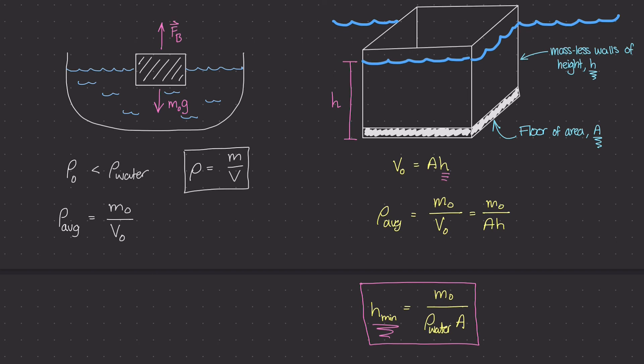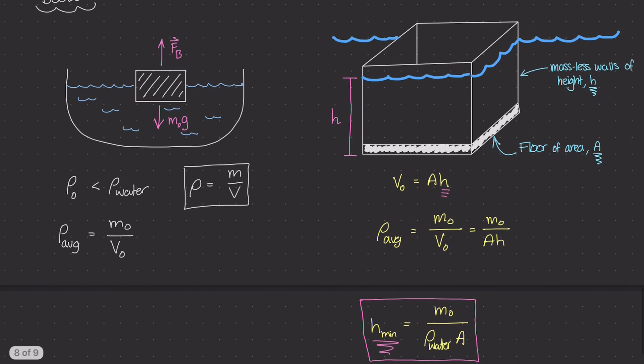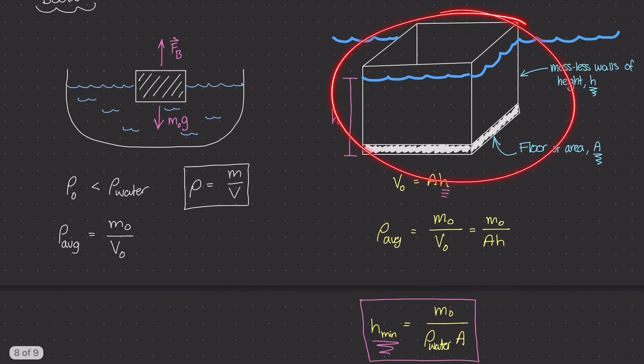Now obviously, this is very simplified - boats don't look like open boxes like this. But hopefully, this does give you a better idea as to how the geometry of the actual boat can push aside or displace a large amount of liquid so that the buoyant force matches the weight of the boat.